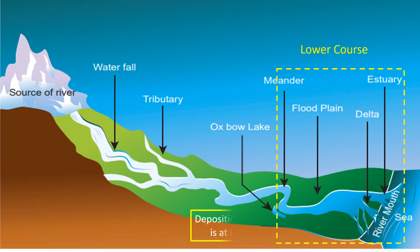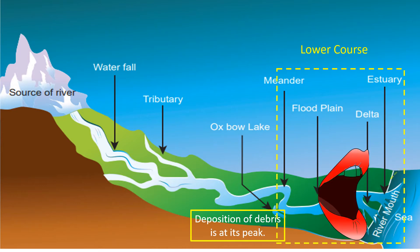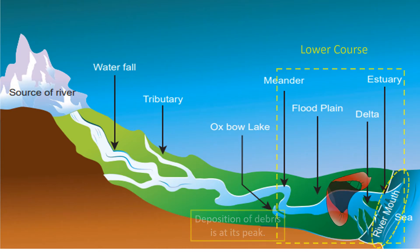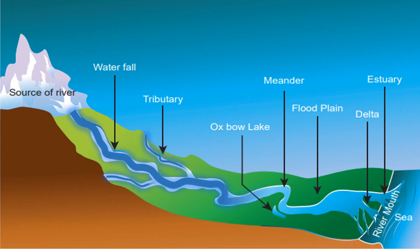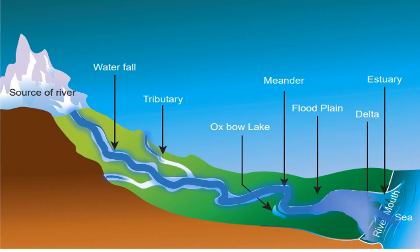So in between these two ends, we can notice several features such as the waterfall, oxbow lake, meander, floodplains, delta, etc. — all landforms of gradation.